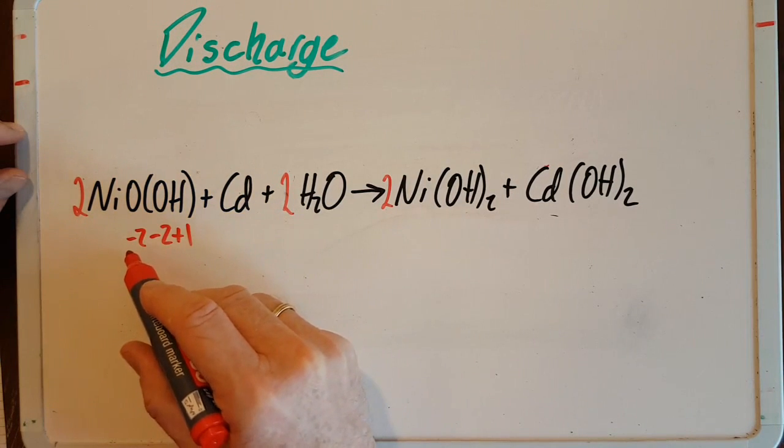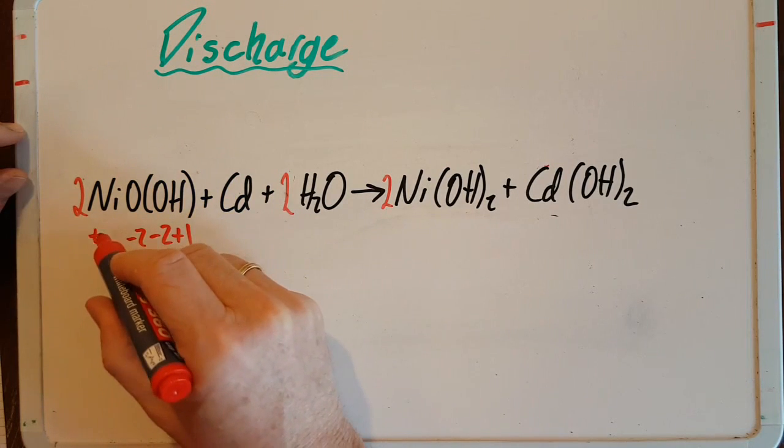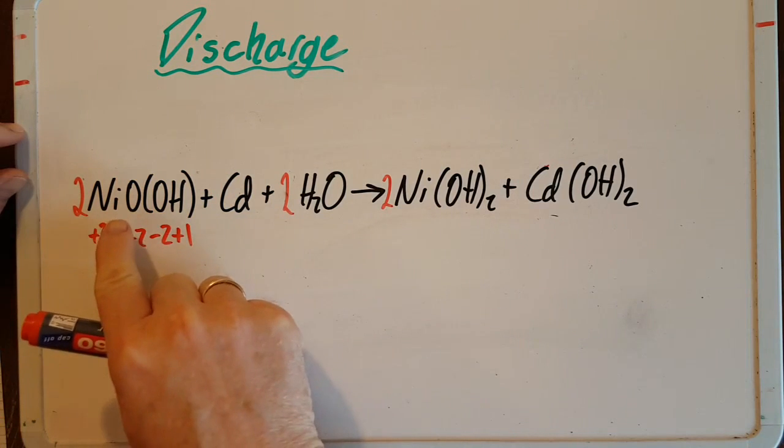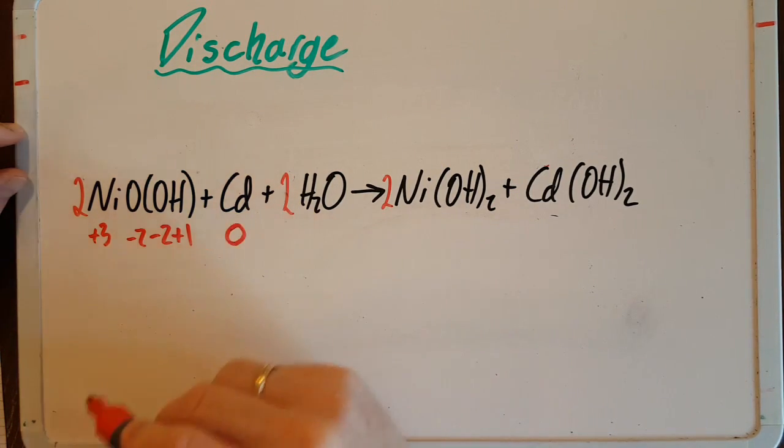Oxygen in the compound minus two, hydrogen plus one. So that gives me nickel as plus three. So that's nickel three oxide hydroxide. All elements are zero. Cadmium is zero.